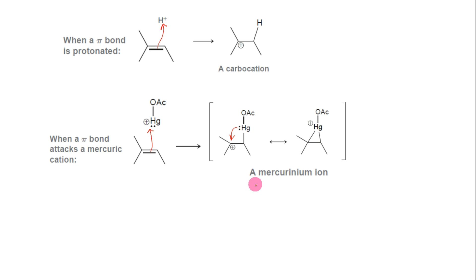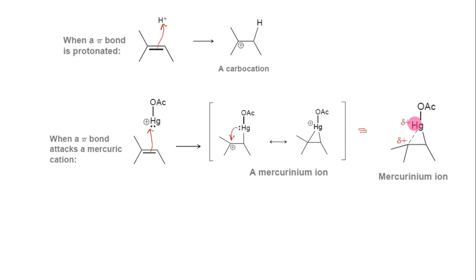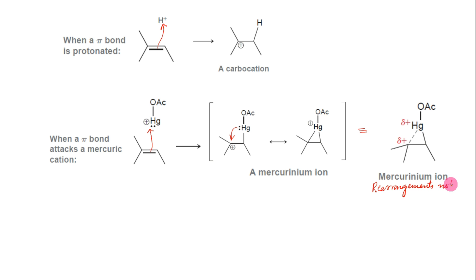This intermediate, called a mercurinium ion, is more adequately described as a hybrid of two resonance structures. A mercurinium ion has some of the character of a carbocation, but it also has some of the character of a bridged three-membered ring. The more substituted carbon atom bears a partial positive charge, delta-plus, rather than a full positive charge. As a result, this intermediate will not readily undergo carbocation rearrangements, but it is still susceptible to attack by a nucleophile.